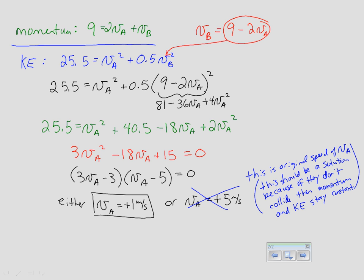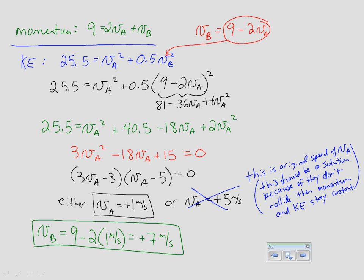To solve for the velocity of object B, substitute back in: VB = 9 − 2 × VA = 9 − 2 × 1 = +7 m/s. If we had plugged in the other answer of VA = 5, we'd get VB = 9 − 10 = −1 m/s, which was its initial velocity — confirming that pair corresponds to the no-collision case.